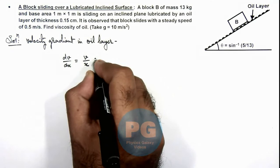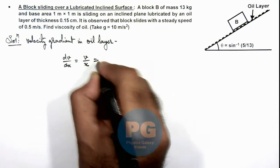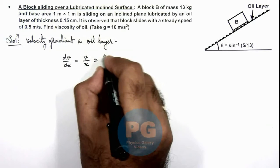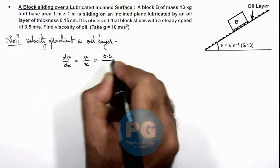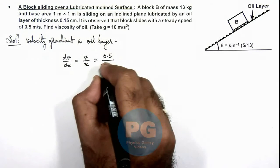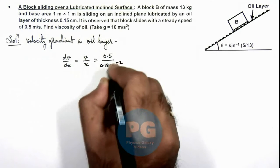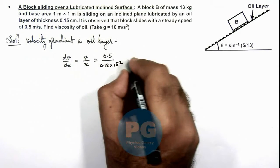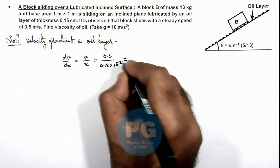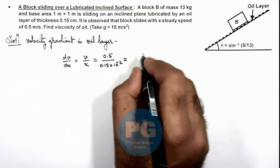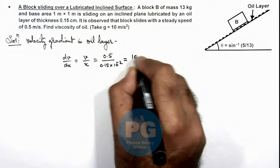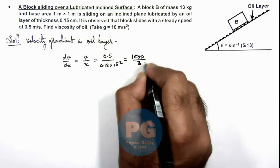We are given that the steady speed of the block is 0.5 meters per second, and the thickness of the layer is 0.15 centimeter, so 0.15 × 10⁻² meter. Here this is giving us the velocity gradient which is equal to 1000/3 per second.